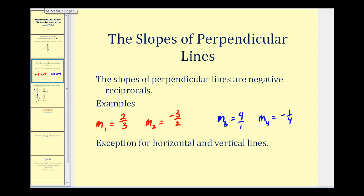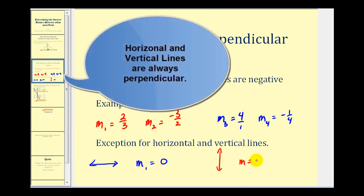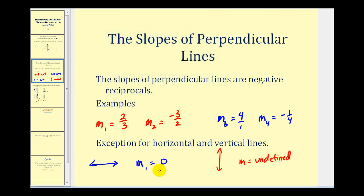The only exception to this is when we have a vertical and horizontal line. A horizontal line has a slope equal to zero and a vertical line has an undefined slope. One way to remember this is to make zero into a fraction as zero over one. The negative reciprocal of zero over one would be negative one over zero, which is undefined.